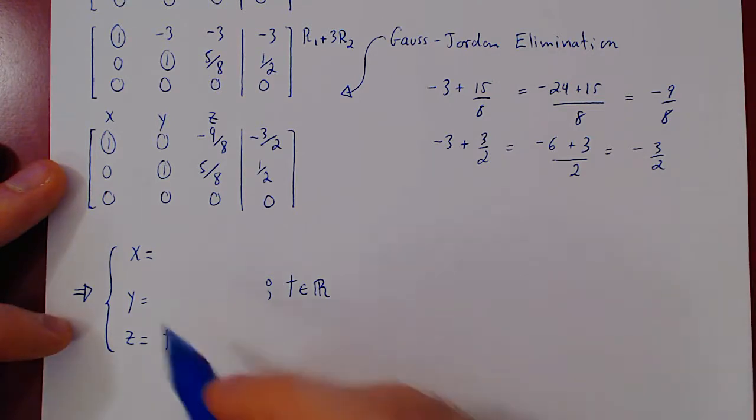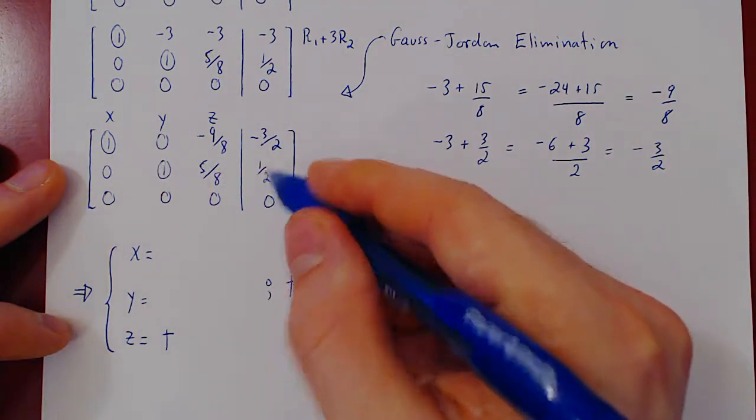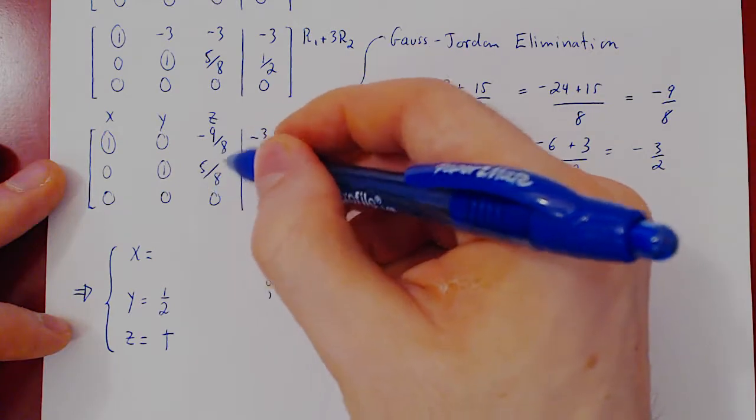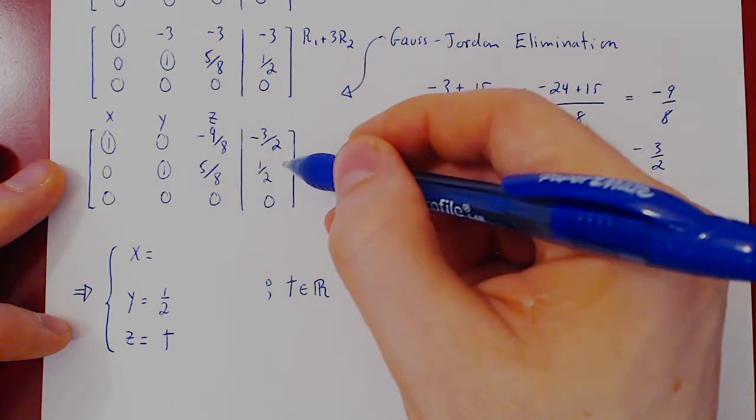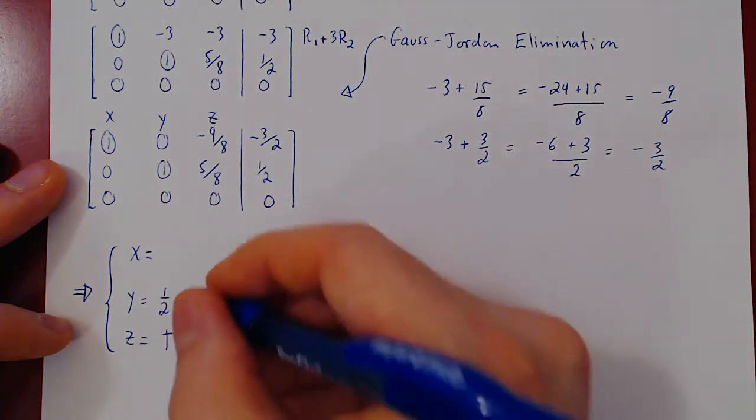Okay, now we can solve for the leading variables. So y will equal 1 half. There's a positive 5 over 8 z on the left. On the right, it becomes a negative 5 over 8 t, of course, because z equals t.